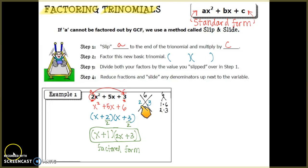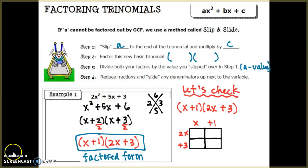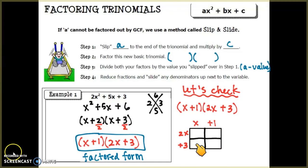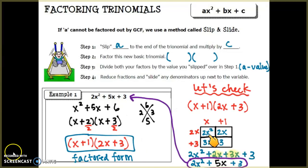A factor is like 2 and 3 — you multiply them to get 6. Here, (x + 1) and (2x + 3) are our factors because multiplying them together gives us back the original trinomial. Let's check using the box method: multiplying (x + 1)(2x + 3) gives us 2x² + 5x + 3, which is exactly what we started with.